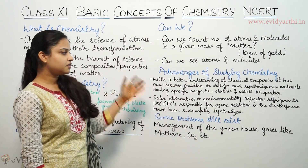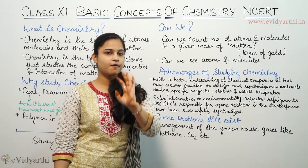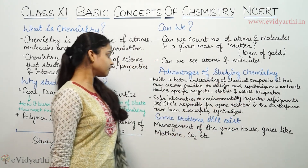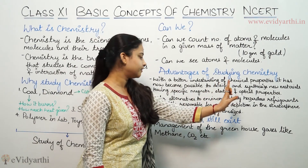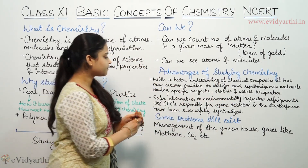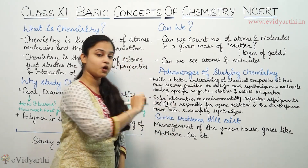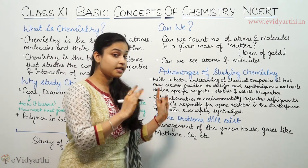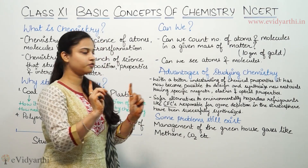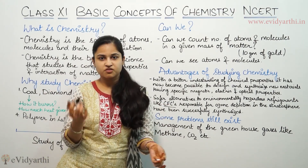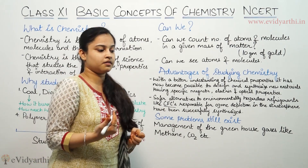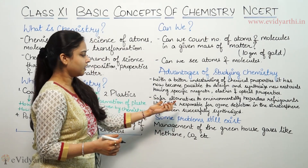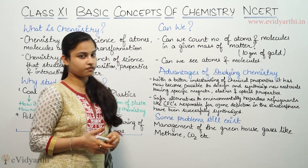Secondly, safer alternatives have also been developed with the help of chemistry, which are helpful in addressing ozone depletion — specifically alternatives for environmentally hazardous refrigerants like CFCs. CFC, known as chlorofluorocarbons, is found in refrigerators such as fridges, and these chlorofluorocarbons are responsible for ozone depletion. By the help of chemistry research, we have generated some alternatives so that we can reduce this ozone depletion.